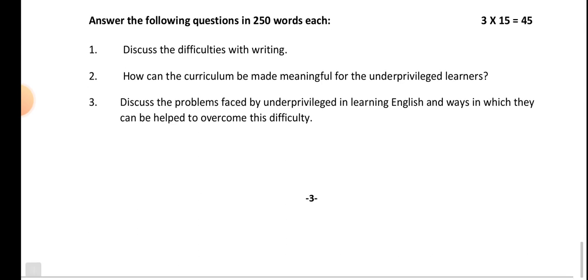Discuss the difficulties with writing. What happens in writing? There are a lot of difficulties — for example, there are mistakes in grammar, and along with grammar mistakes there are other types of mistakes as well. So there are various types of mistakes in writing.